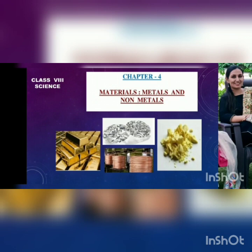If you look around in your surroundings, you will observe many things like water bottle, utensils, electric wires, clock, etc. All these things are made up of different materials. These materials are made up of different elements. An element is a substance that is made up of same type of particles, and in scientific terms we can call these particles as atoms. Depending on the properties of the elements, we can classify different materials as metals, non-metals and metalloids.